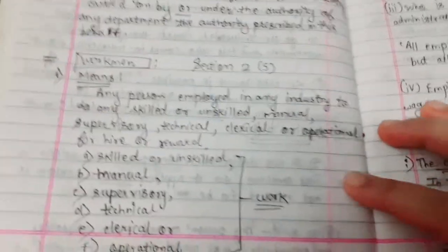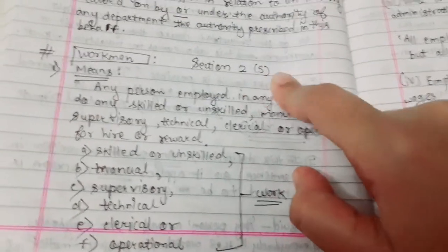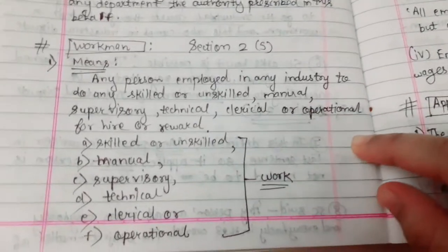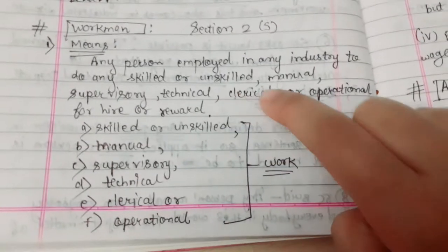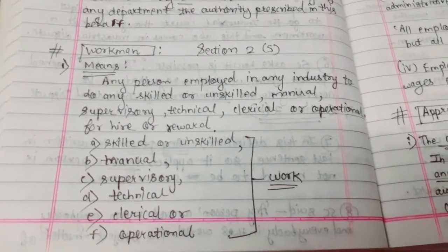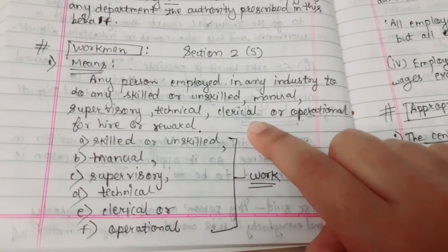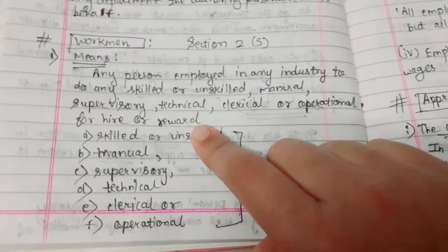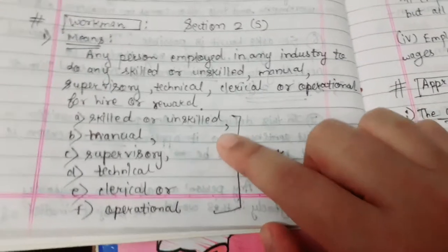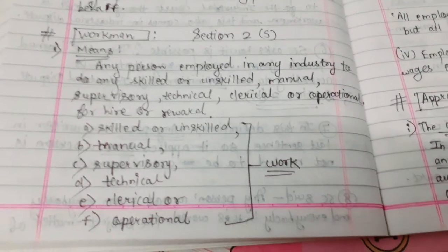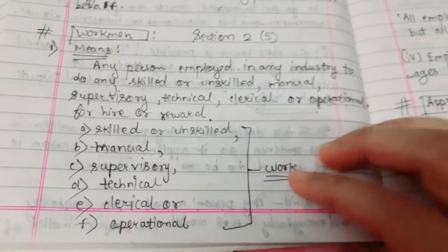The term 'workman' is defined in Section 2, clause (s). Workman means any person employed in an industry to do any skilled or unskilled, manual, supervisory, technical, clerical, or operational work for hire or reward. When such works are done, the person is called a workman.